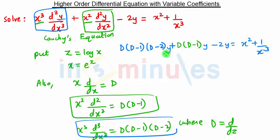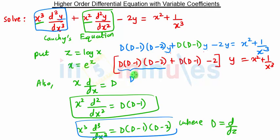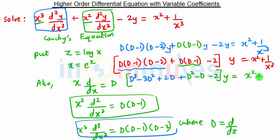The right-hand side is x² + 1/x³. From these three terms we take y common, and in the bracket we have D(D-1)(D-2) + D(D-1) minus 2, equal to x² + 1/x³. Now we multiply out these terms: we get D³ - 3D² + 2D, and multiplying the other two terms we get D² - D, minus 2, into y, equal to x² + 1/x³.